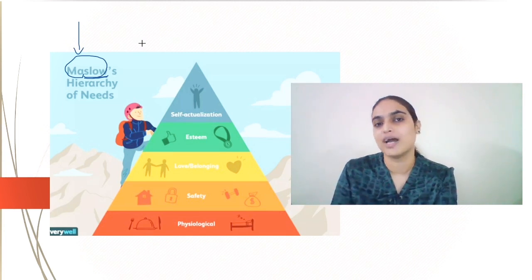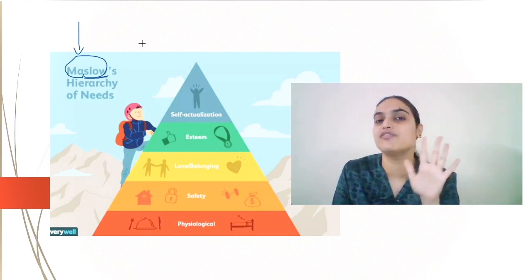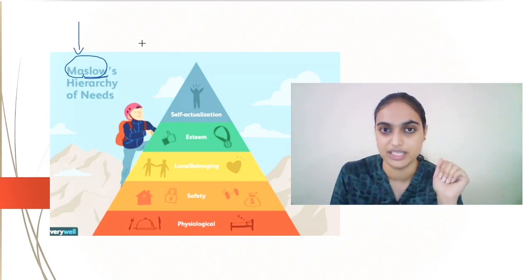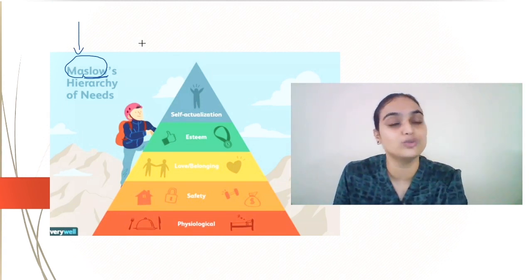So what Maslow said was that there are five different levels of needs. Some needs are lower level needs, some are more higher level needs. And these needs are going to motivate a person.